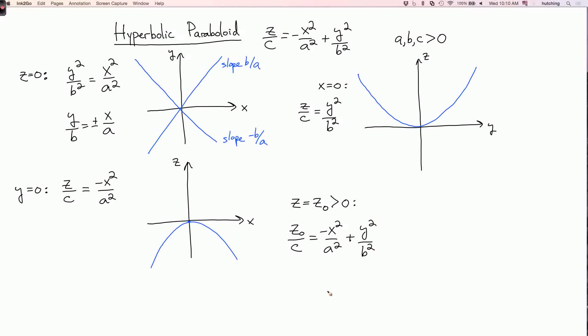And this is the equation of a hyperbola, hence the hyperbolic in hyperbolic paraboloid. And what kind of hyperbola is it? Well, since z₀ and c are positive, if I set y equals zero, I get no solutions. So it doesn't intersect the x axis, but it does intersect the y axis. So it's a hyperbola looking like this.